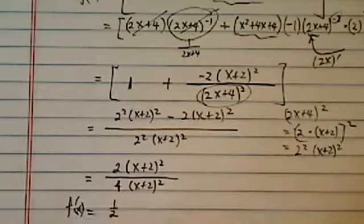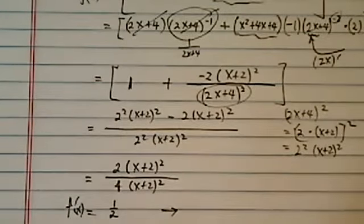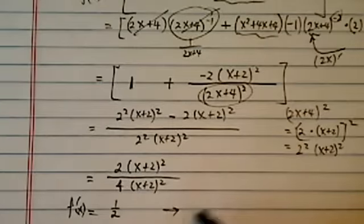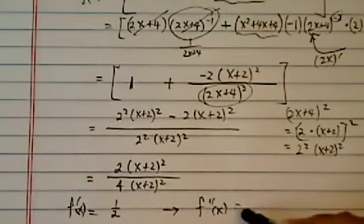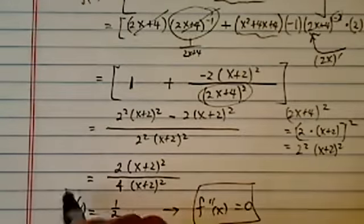f prime of x equal to 1/2. Well, all roads lead to Rome, and f double prime of x equal to 0 as well.